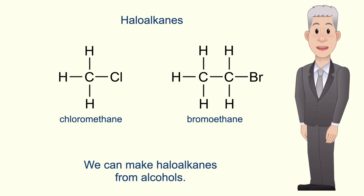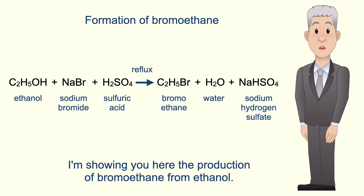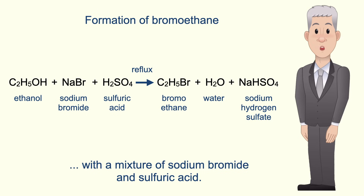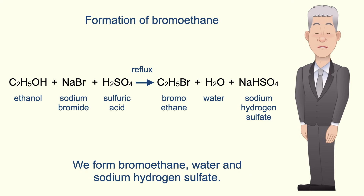We can make haloalkanes from alcohols, and you're not required to know the mechanism for this reaction. Here is the production of bromoethane from ethanol. In this reaction we heat the ethanol under reflux with a mixture of sodium bromide and sulfuric acid at a concentration of around 50%. We form bromoethane, water and sodium hydrogen sulfate.